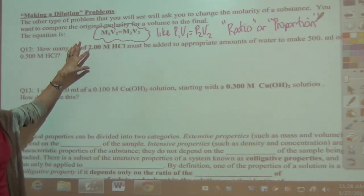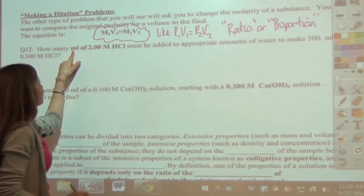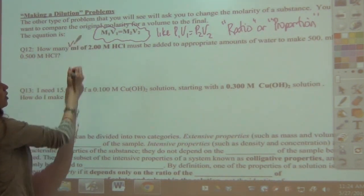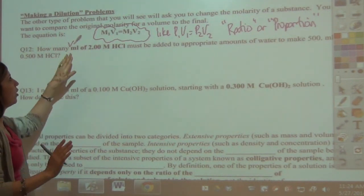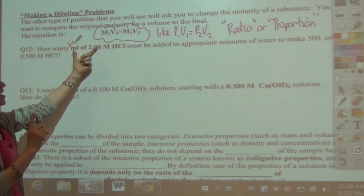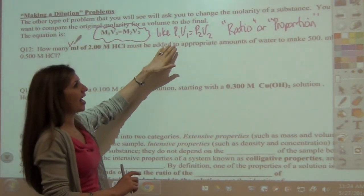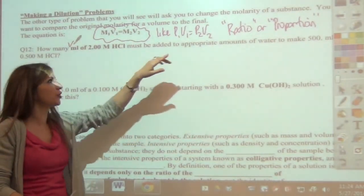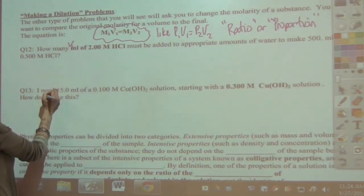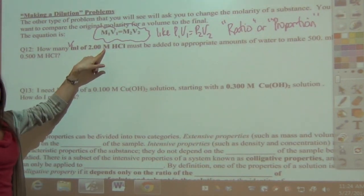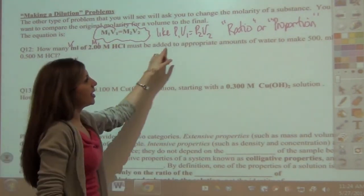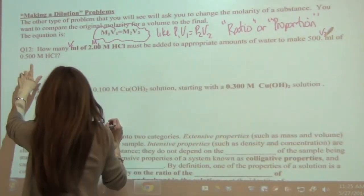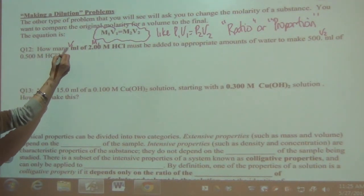Before you start, make sure you label everything. The first problem asks: how many milliliters — so we're looking for a volume. It doesn't matter if you call it V1 or V2, as long as the molarity matches — M1 goes with V1, M2 goes with V2. We haven't made the 500 mL yet, so that's our V2, making its molarity M2. The original solution is V1 and M1. Added to appropriate amounts of water to make 500 mL — that's V2. Of a 0.5 molar HCl — that's M2.